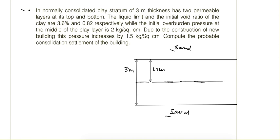The liquid limit and initial void ratio of the clay are 36% and 0.82 respectively, while the initial overburden pressure at the middle of the clay layer is 2 kg per cm² and due to the construction of the new building the pressure increases by 1.5 kg per cm².